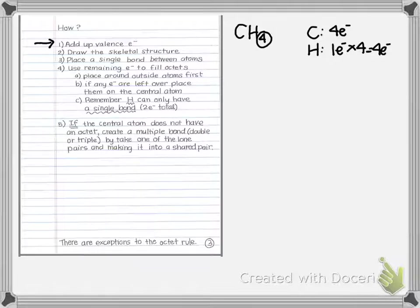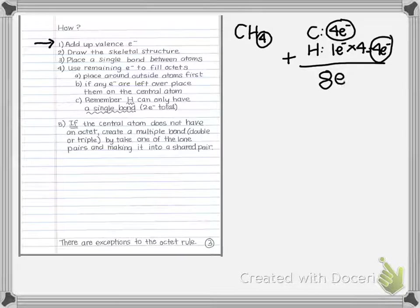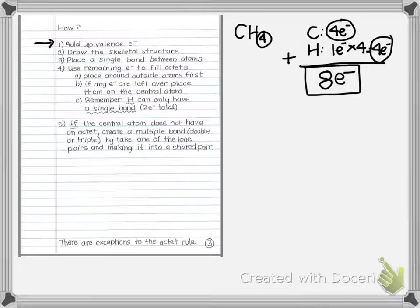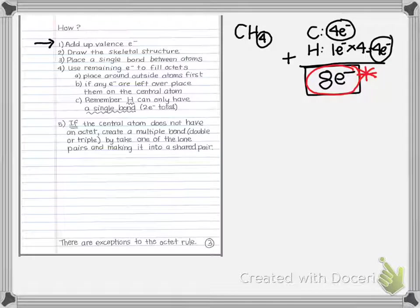Adding those together, four plus four gives a total of eight valence electrons for CH4. This number is critical — it could range from eight up to 32 or 36 depending on the elements and how many you have. For this example it's eight, and I cannot use more or fewer than this number in my structure.